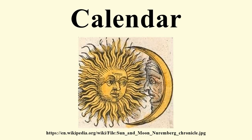Not all calendars use the solar year as a unit. A lunar calendar is one in which days are numbered within each lunar phase cycle. Because the length of the lunar month is not an even fraction of the length of the tropical year, a purely lunar calendar quickly drifts against the seasons, which don't vary much near the equator. It does, however, stay constant with respect to other phenomena, notably tides. An example is the Islamic calendar.